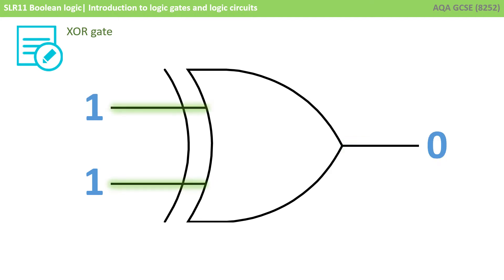But here is where it differs from an OR gate. If both inputs are 1, then the output is 0. With an OR gate, this would still be a 1, so this is the difference you need to be able to spot and be aware of.